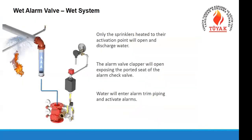This is basically a wet alarm valve. It works as an alarm device — it gives an alarm. There is a water motor alarm, like a gong, that turns with water velocity and gives an alarm mechanically, ringing like a bell to alert people in the building to escape and guide the fire brigade to the right location. We also have an electrical alarm device: when water flows, the electrical alarm is sent to the fire detection panel, giving a secondary electrical alarm signal.